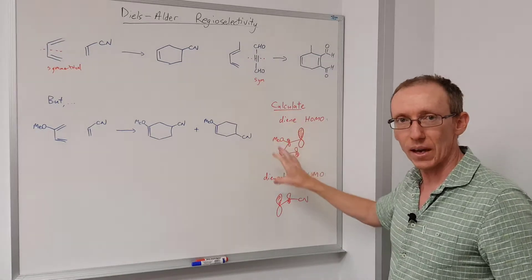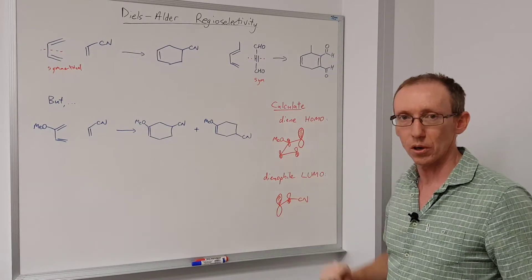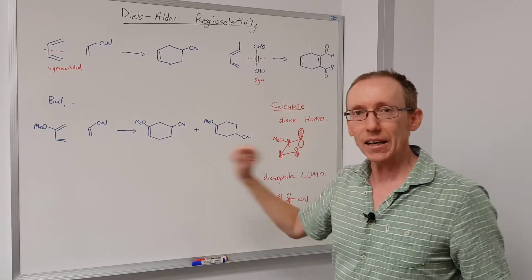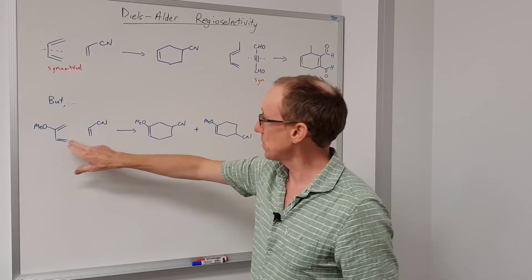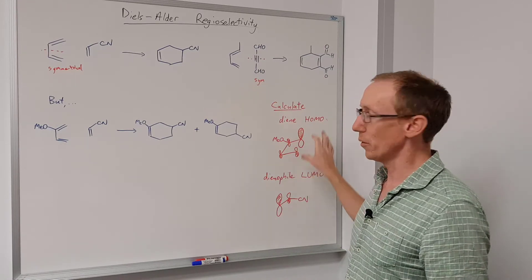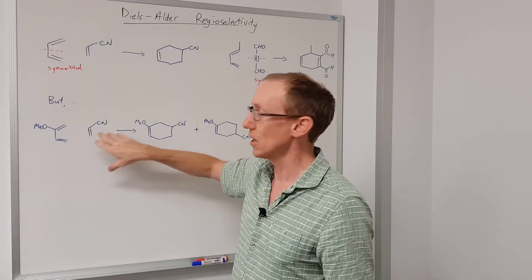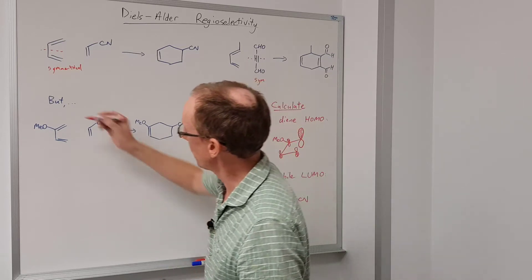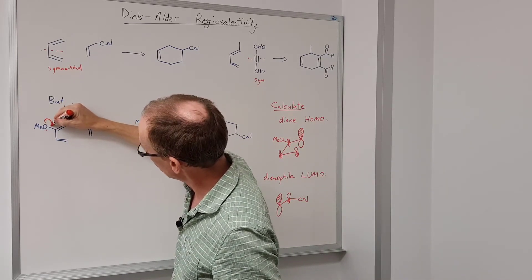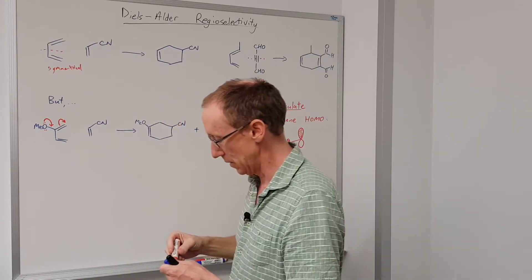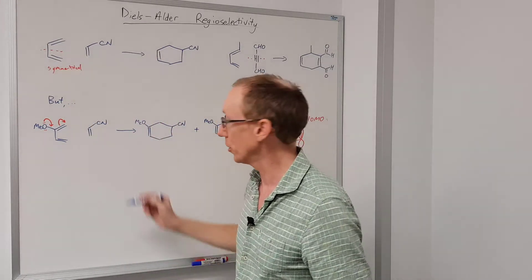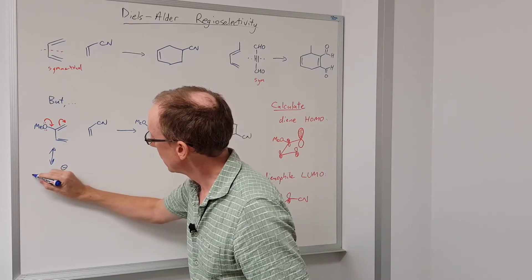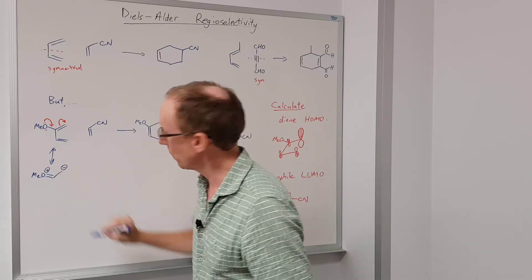There are guidelines about how to estimate these HOMOs and LUMOs and what the orbital coefficients will be. We'll look at one of the simplest cases and a case where you can use a little trick. With this particular reaction, we can estimate the HOMO and the LUMO by just looking at resonance structures for these compounds. If we look at this methoxy-substituted diene and push electrons onto the alpha carbon, we can draw a resonance form for this molecule where we have a negative charge at that position and a positive charge on the oxygen.